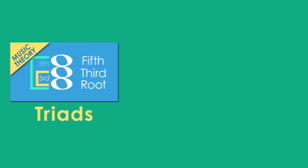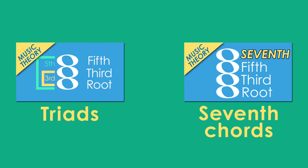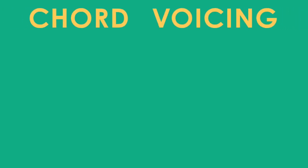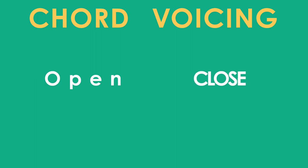So far, we've talked about how to build chords like triads and seventh chords. If you want to review those videos, I'll put a link to them in the description below. The next thing I want to talk about is chord voicing. In Western music theory, there are two main types of voicing: open and close.